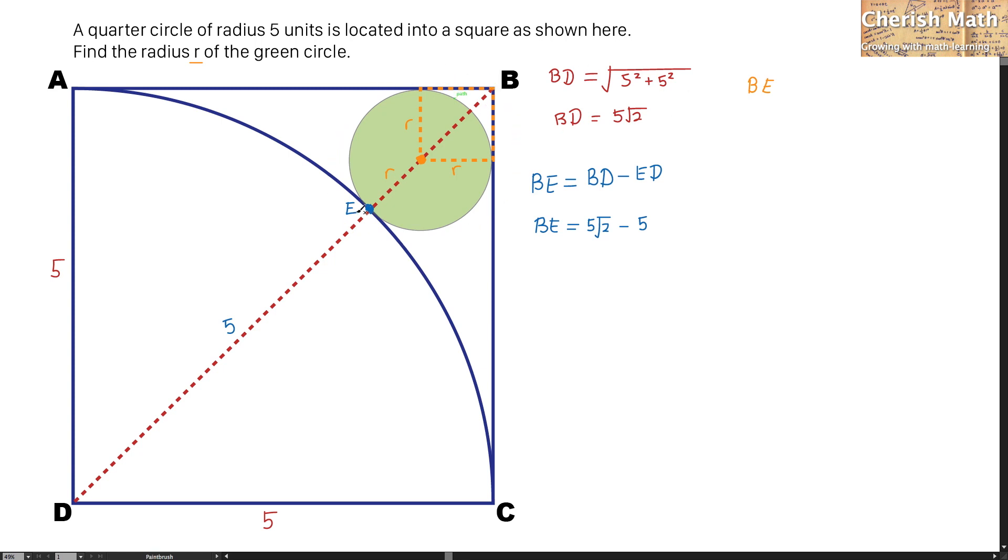So I'm going to take from point E to the center of the green circle here, which is the radius R, and I'm going to add up with the length of B to the center of the circle here. This part that I'm highlighting here, I will have to use the Pythagorean Theorem again.